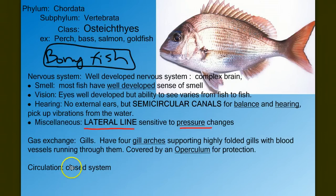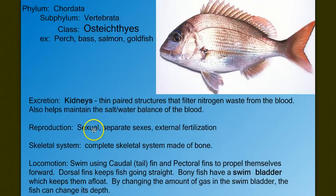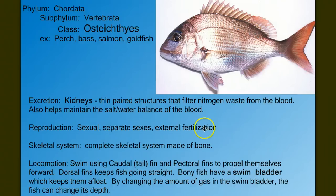Bony fish have a closed circulatory system. They have a pair of kidneys to get rid of nitrogenous waste and help maintain a salt-to-water balance of the blood, which is important in both fresh and saltwater fish. Osteichthyes usually exhibit external fertilization. In contrast, some sharks show internal fertilization where the male deposits gametes inside the female. But in bony fish, the female releases eggs and males release sperm on top of the eggs outside the body, and the eggs develop externally.